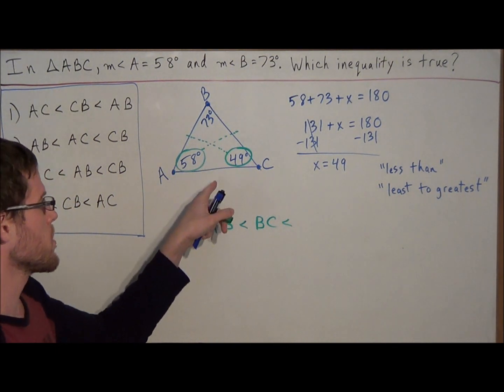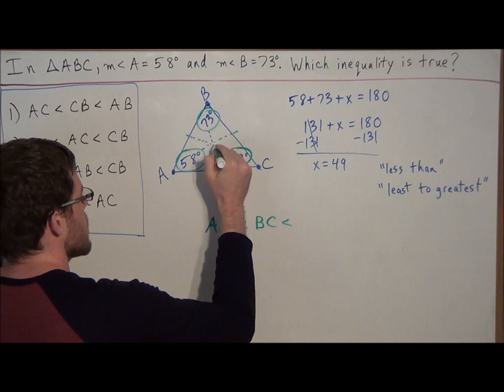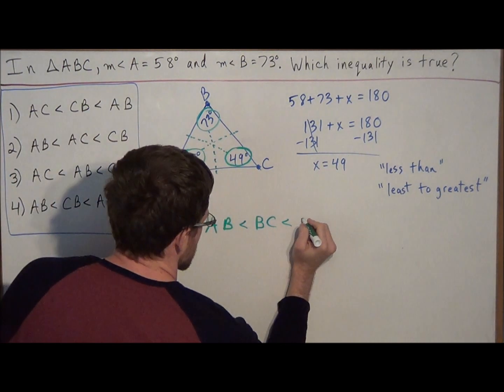And now by process of elimination, we know the last side is AC. Or we could go to the biggest angle 73. We go opposite to side AC.